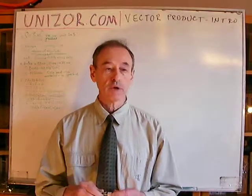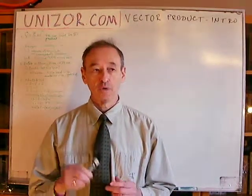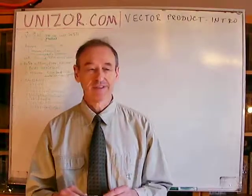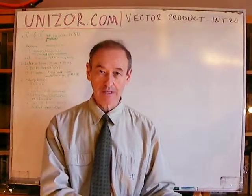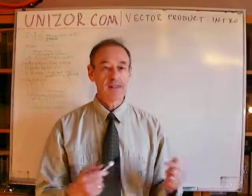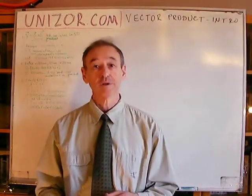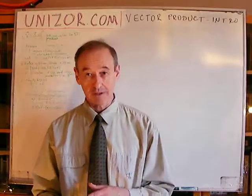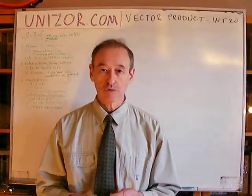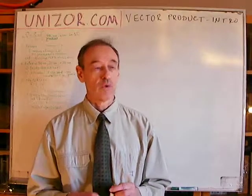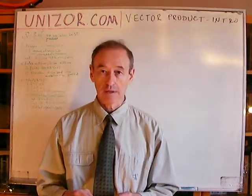Now we will talk about another operation which is also named product. There was a scalar product, whose result is a scalar. Now we will talk about vector product, whose result is a vector. So two vectors are engaged in this operation, which is called vector product or cross product, and the result is a vector.